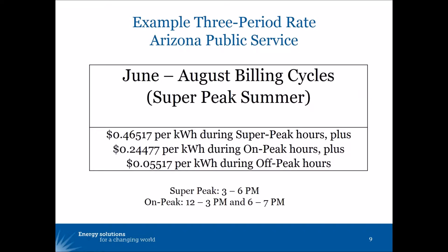You might also have a super peak period — the time of day when delivering energy is most expensive for the utility. For that short period of the day, you have an especially high volumetric rate. In the Arizona example, the super peak happens between 3 and 6 in the afternoon when demand for energy is typically highest, and as demand goes up, the cost goes up.